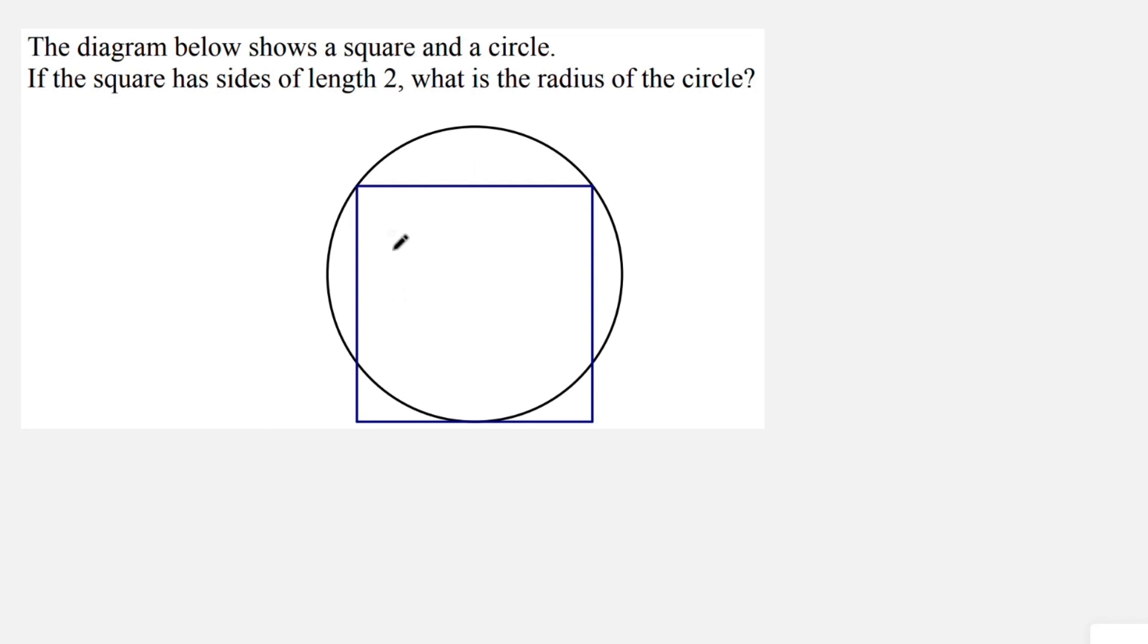and the square has a side length of 2, and the bottom edge of this square is a tangent to our circle. What we want to do is work out the radius of this circle.